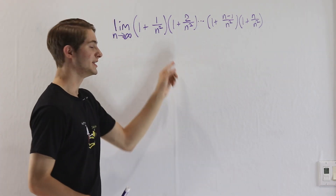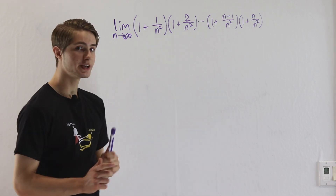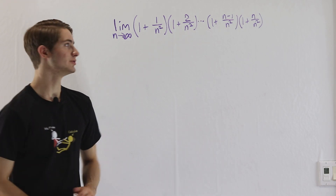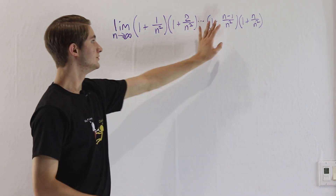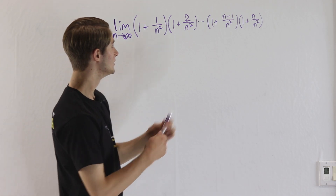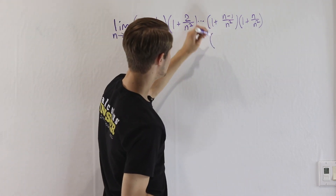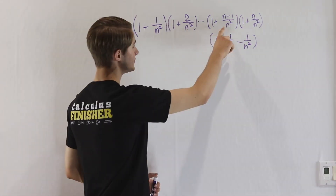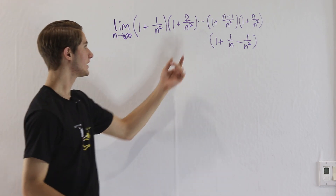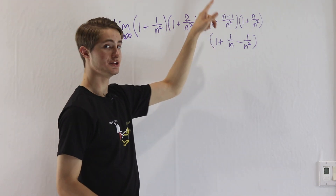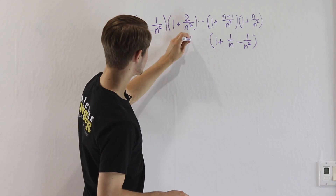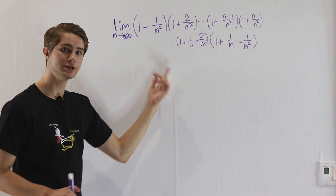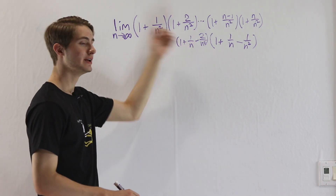The first thing I notice is that the term on the right, 1 plus n over n squared, is actually already equal to 1 plus 1 over n. But that's not true of the other terms. For example, 1 plus n minus 1 over n squared would be 1 plus 1 over n minus 1 over n squared, just by splitting up the fraction. And 1 plus n minus 2 over n squared we could write as 1 plus 1 over n minus 2 over n squared, then minus 3 over n squared, minus 4 over n squared, and so on.